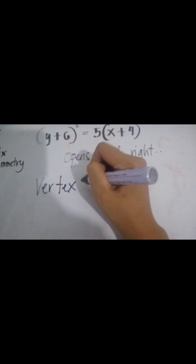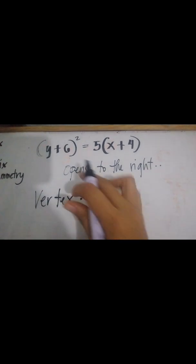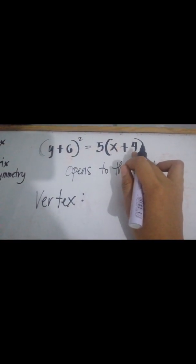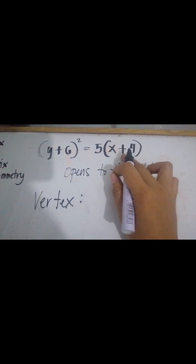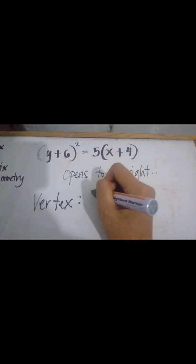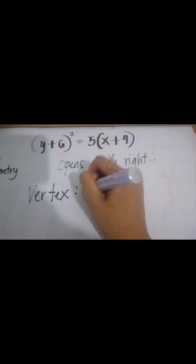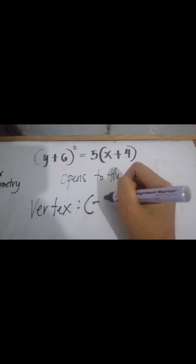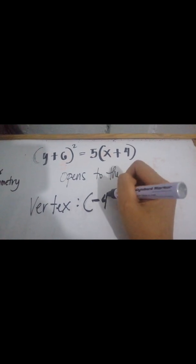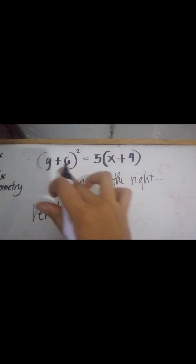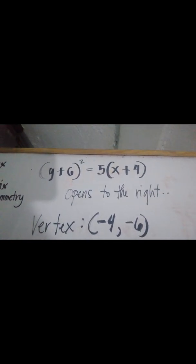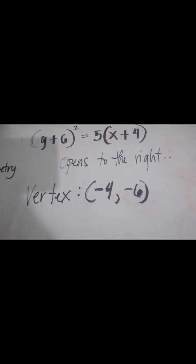From the standard form, our x-coordinate for the vertex is negative 4, and our y-coordinate is negative 6. So that is our vertex.